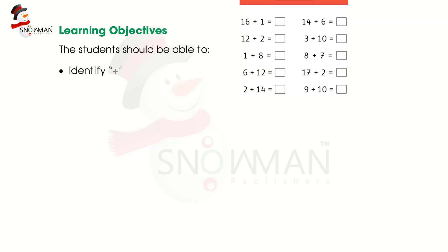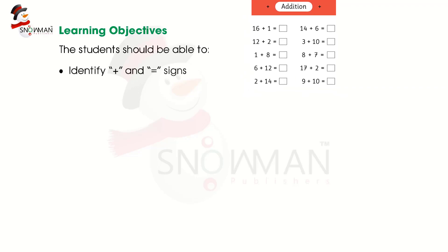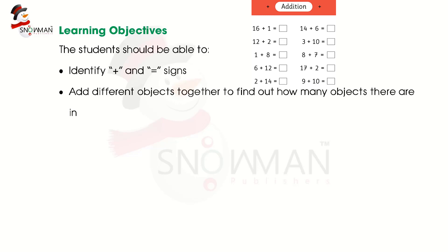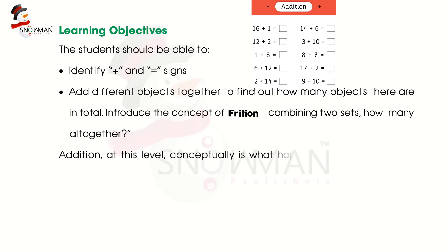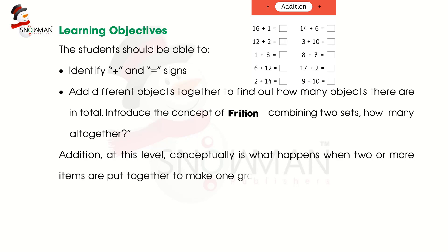identify plus and minus signs, and add different objects together to find out how many objects there are in total. Introduce the concept of addition — combining two sets — how many altogether. Addition at this level, conceptually, is what happens when two or more items are put together to make one group.